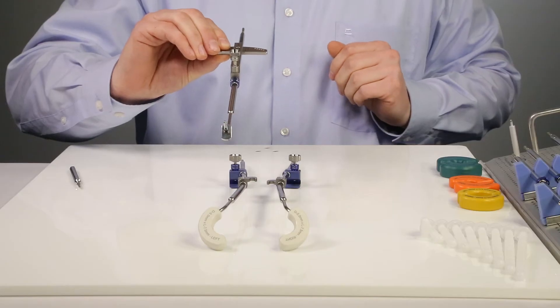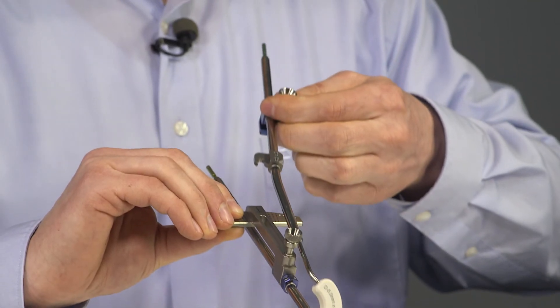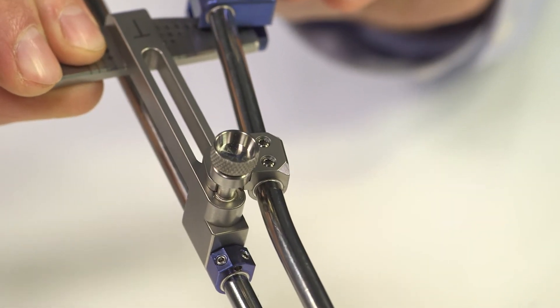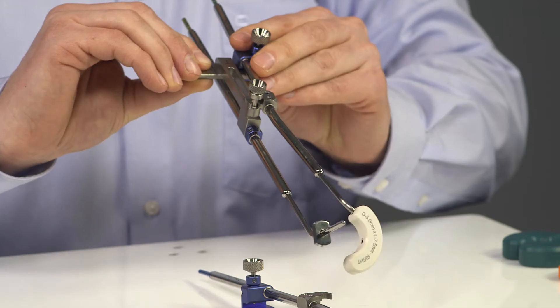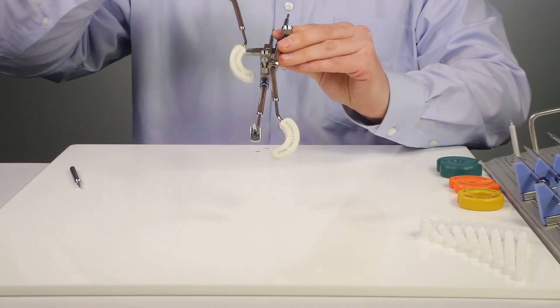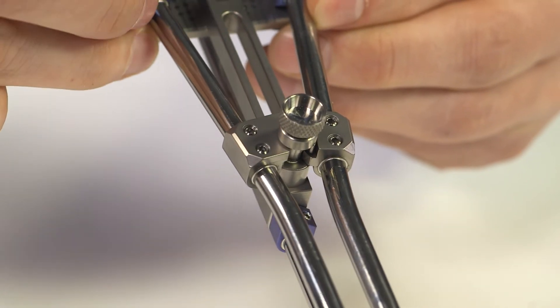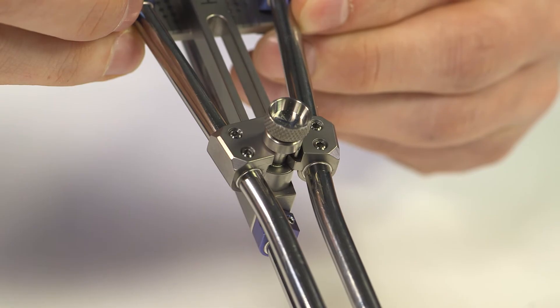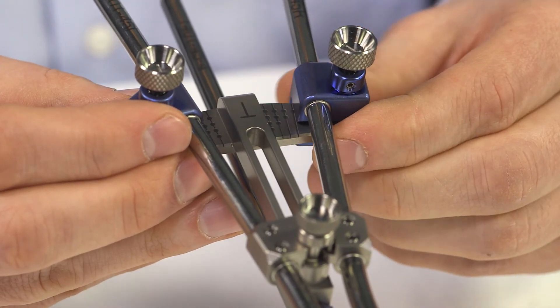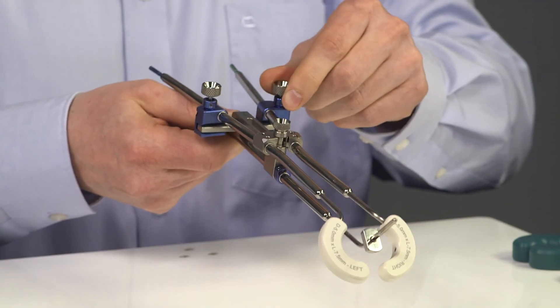Now I select the right split ring, insert it and simply lock it into place. Now the left split ring is inserted and locked into place. Once the desired ring angle is selected, it can be simply fixed with the corresponding screw.